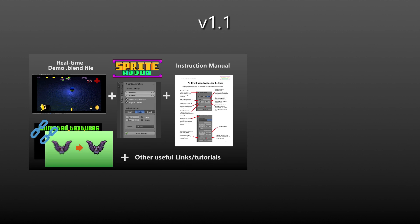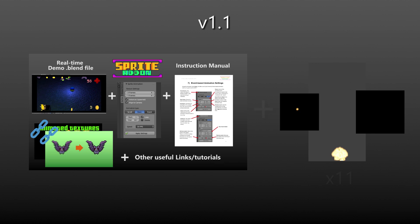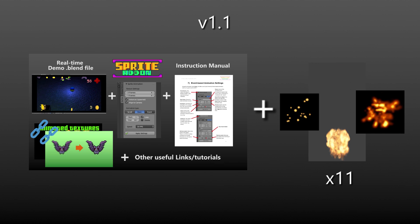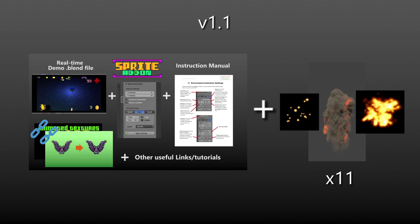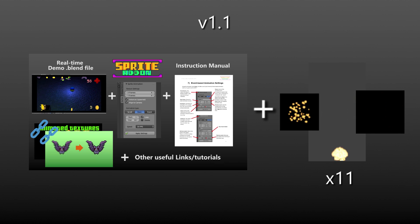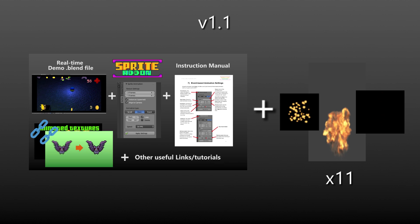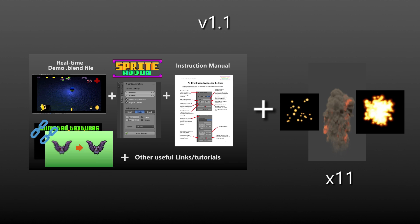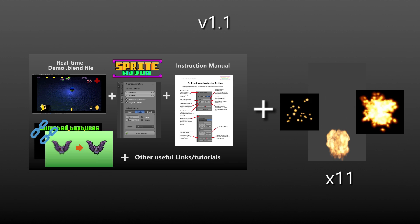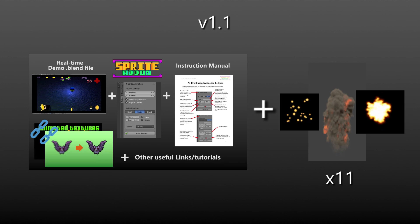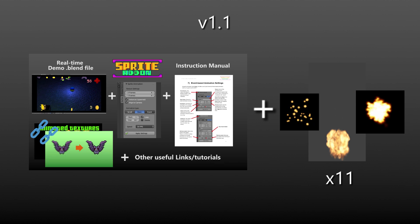Not too long after I released the initial add-on, I decided to add 11 different sprite sheets — mainly explosions, sparks, smoke, and that sort of thing that just takes time to render out. I thought I might as well include them to save you some time if you're trying to make something for your game.